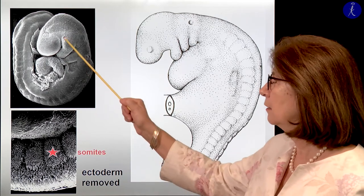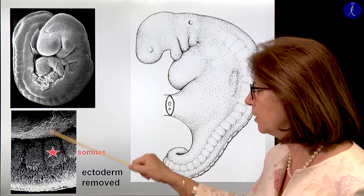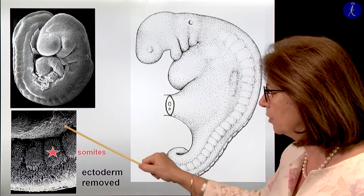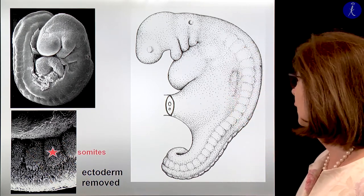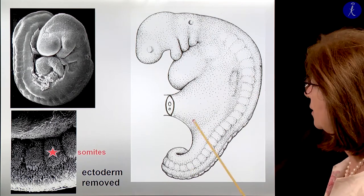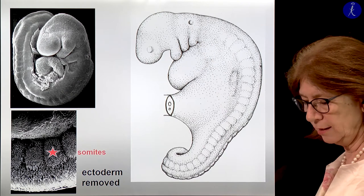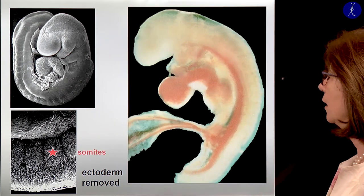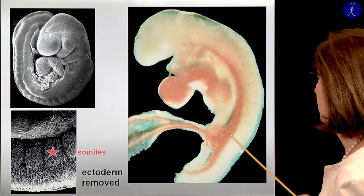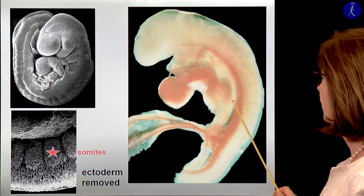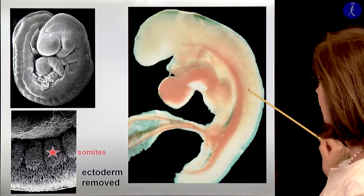Just some illustration: head process, pharyngeal arches, heart primordium, and here you have the somites. In this picture the ectoderm is removed, and if the ectoderm is removed you see the actual tissue balls of the somites with borders between them. This drawing is similar, with three pharyngeal arches. Then we have a true embryo where you see the brain vesicles, the dorsal aorta, the heart primordium, the liver primordium, and in the back these fine borders — given by vessels — with the somite territories in between.